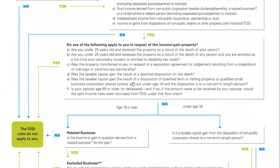Is your spouse age 65 or older — yes — or deceased? They would be age 65 or older. And if so, if the amount were to be received by your spouse, would the split income have been excluded from TOSI under this flowchart? So we have the age 65 exemption. That means the actual physician in this case would have had the income not subject to TOSI. It's a little bit of a funny rule, but it basically just means that your spouse would have income that wouldn't be TOSI income. And that's true — it's the other person that we're concerned with here.